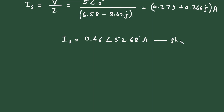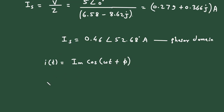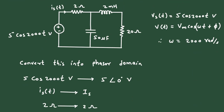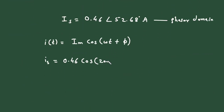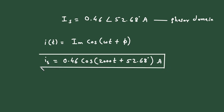Currently IS is in phasor domain in polar form. Converting to time domain using I(t) = Im·cos(ωt + φ), with Im = 0.46, ω = 2000, and φ = 52.68°, we get Is(t) = 0.46·cos(2000t + 52.68°) amperes.